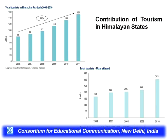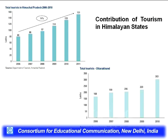Looking at tourist statistics: total tourists in Himachal Pradesh grew almost 14 percent continuously from 2006 to 2011. Uttarakhand also showed continuous increase from 2006 to 2010. Everywhere in the Himalaya — particularly Jammu & Kashmir, Himachal Pradesh, and Uttarakhand — tourism is growing. These regions are very famous for pilgrimage, and many foreign tourists visit Himachal Pradesh and Jammu & Kashmir.